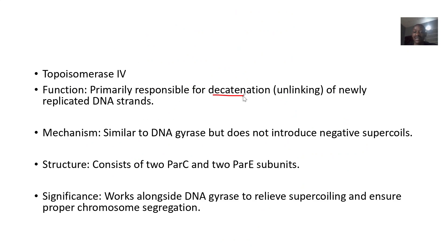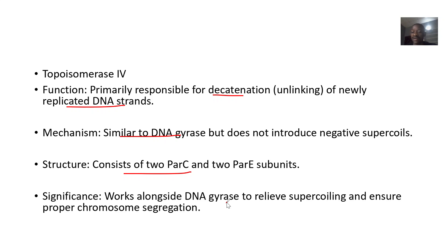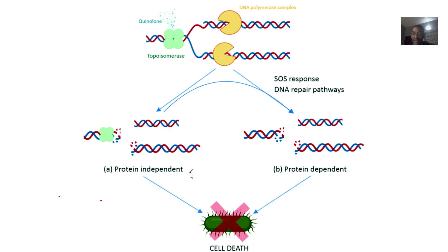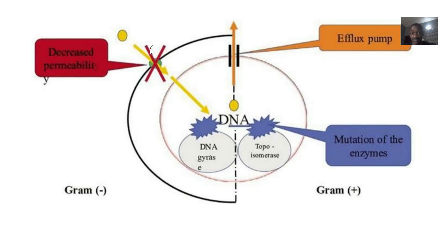Topoisomerase 4 is primarily responsible for decatenation — the unlinking of two replicated DNA strands. Its mechanism is similar to DNA gyrase but does not introduce negative supercoils. Its structure consists of two ParC and two ParE subunits. It works alongside DNA gyrase to relieve supercoiling and ensure chromosome segregation. It is also a target for fluoroquinolones, or quinolones in general.